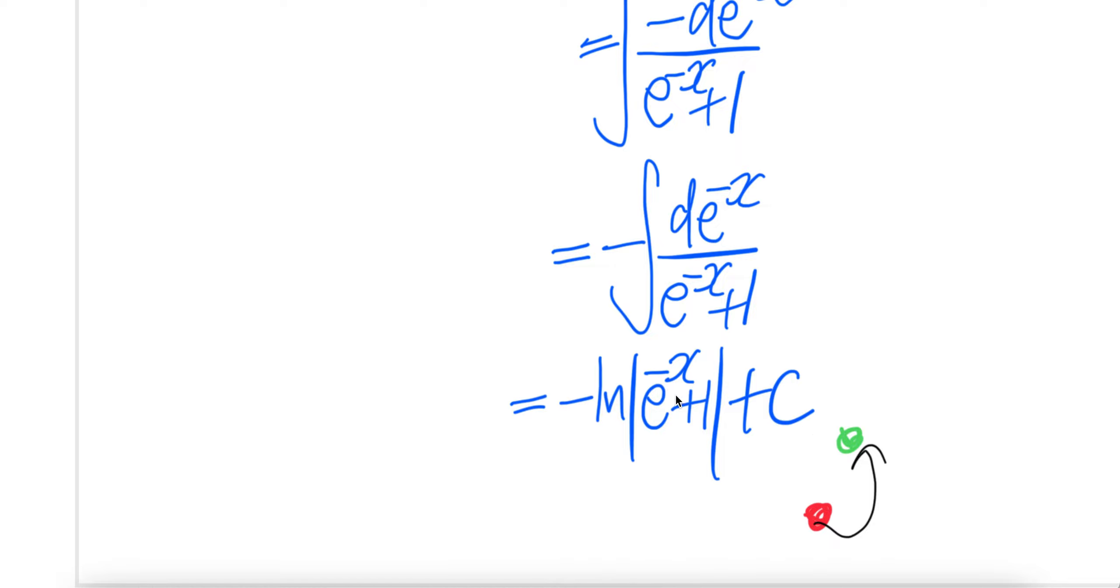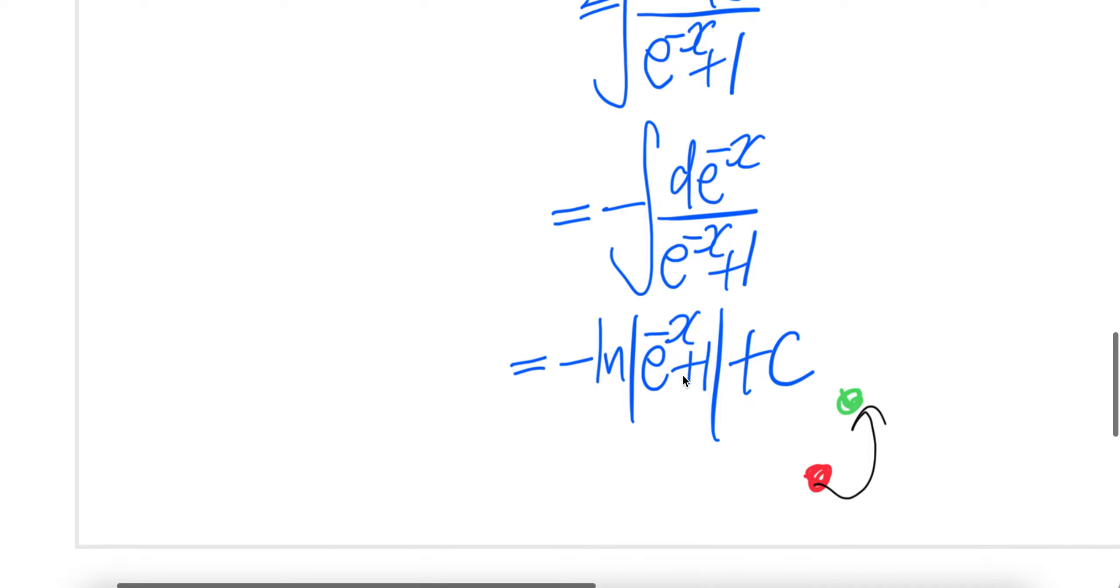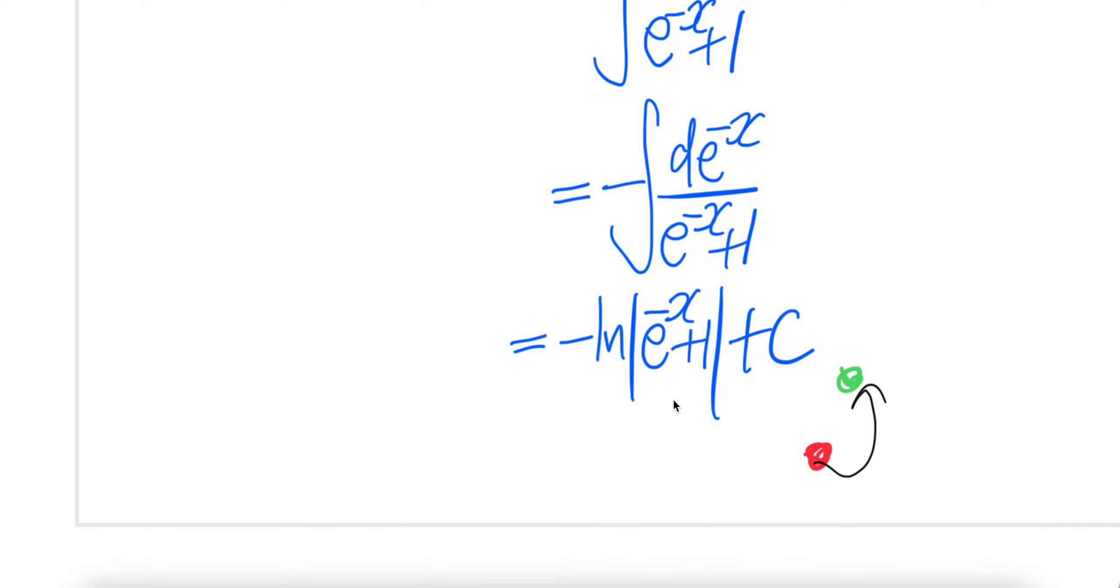Very easy because we can express this, in terms of, multiply top and bottom with e to the power x. Here you get, you have e to the power x times this, you get 1 plus e to the power x divided by e to the power x. Okay.